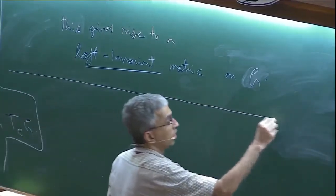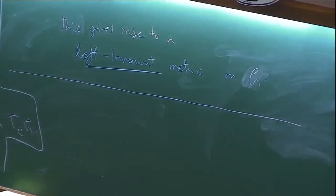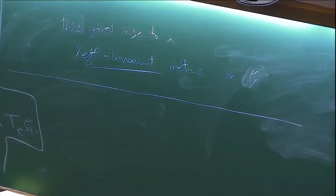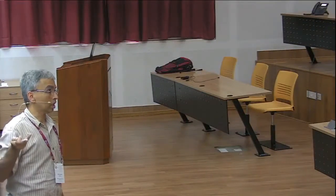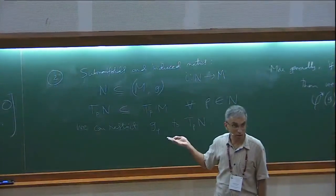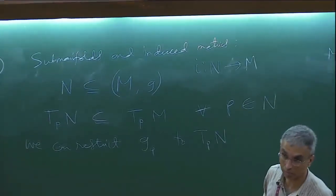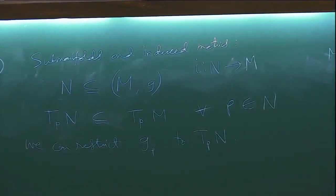So for now, this is my list of examples, and they cover a large class of Riemannian manifolds. For instance, one of the most well-studied and important subclasses is submanifolds of Euclidean space — just start with R^n and consider submanifolds. The Riemannian geometry of those submanifolds is already a very interesting thing, with many open questions.